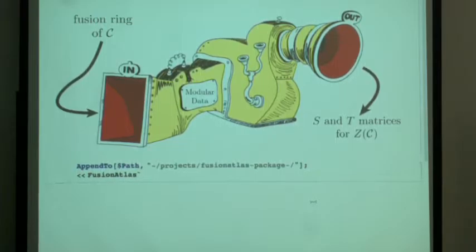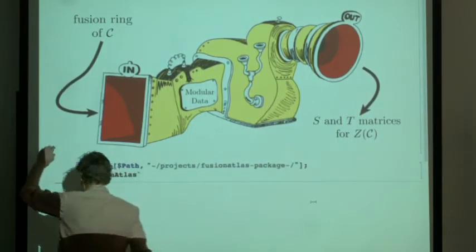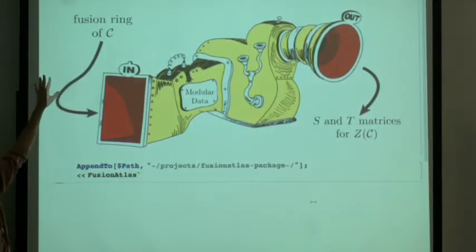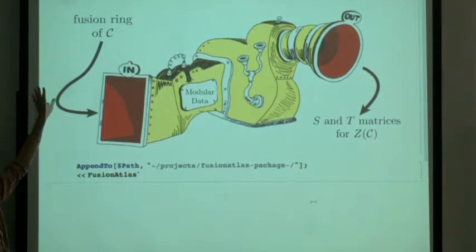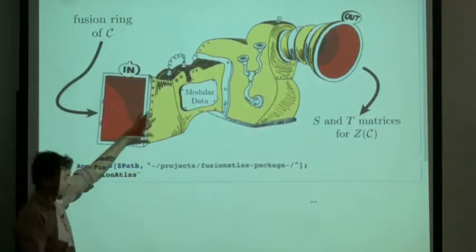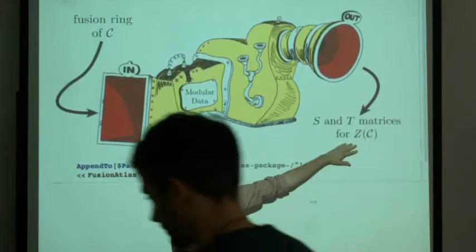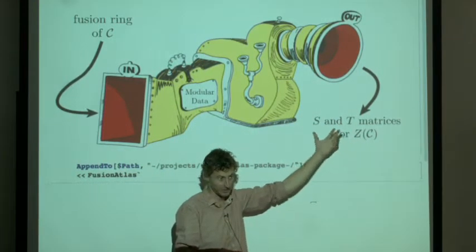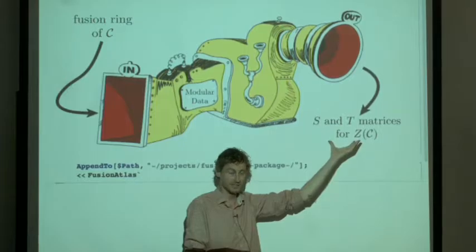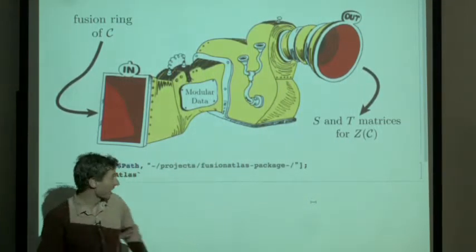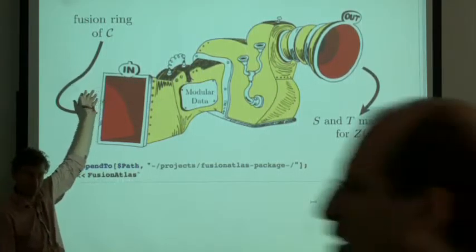So what does the modular data machine do? It takes as input merely the fusion ring of some fusion category C — just the fusion multiplicities of tensoring the symbols together and decomposing them, none of the other data. And it does some Dr. Seussian stuff in the middle, and out of the end come the S and T matrices — possibly several different possible S and T matrices, but some finite set — for the center of a putative fusion category with that initial fusion ring. And possibly nothing.